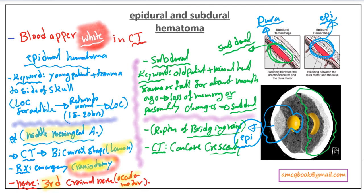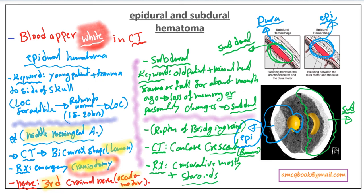The subdural hematoma appears as a concave crescent banana shape, as shown on the right. Treatment is usually conservative with steroids. To summarize: concave crescent banana shape, bridging vein rupture, and it usually occurs in old patients.